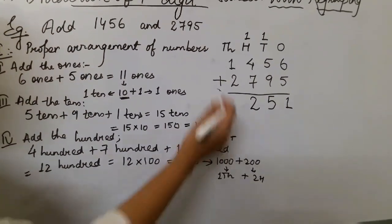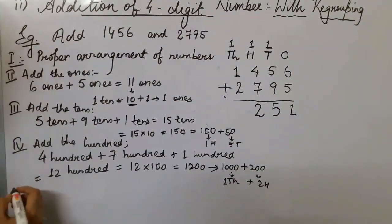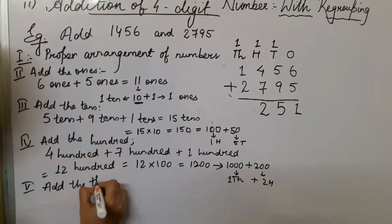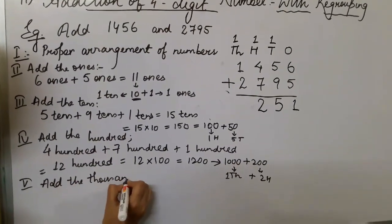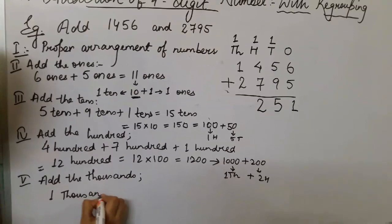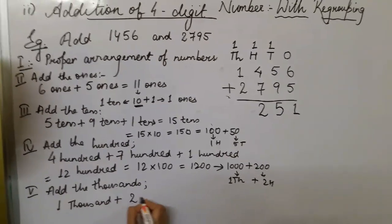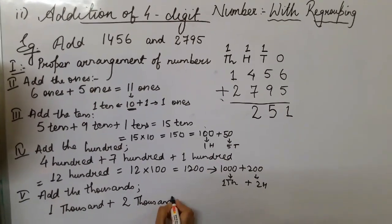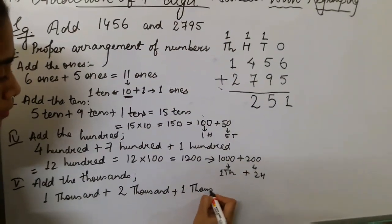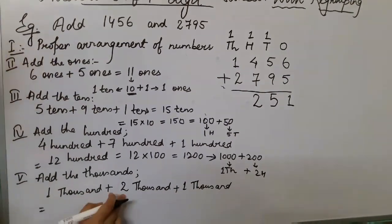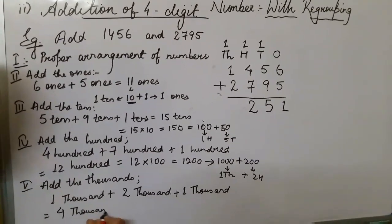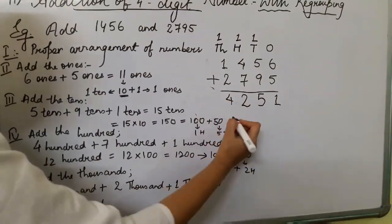That one carried belongs to the thousands place. So the last step: add the thousands. One thousand plus two thousand plus one thousand (carried) gives three plus one equals four thousand. So in the thousands place we write 4. The answer to this example with regrouping is 4,251.